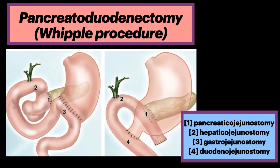The Whipple procedure is also known as a pancreaticoduodenectomy. Drawings show the pancreatic head and the duodenum have been resected. Number 1 is the pancreaticojejunostomy. Number 2 is the hepaticojejunostomy. Number 3 is the gastrojejunostomy. Number 4 is the duodenojejunostomy with preservation of the pylorus.